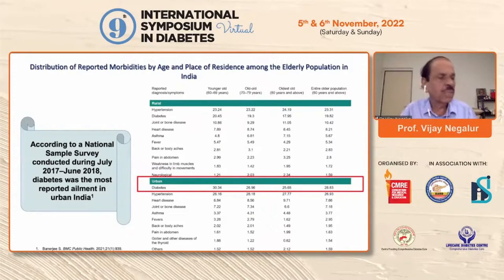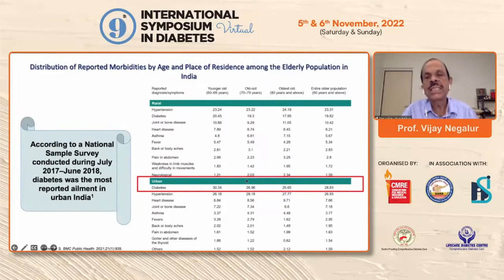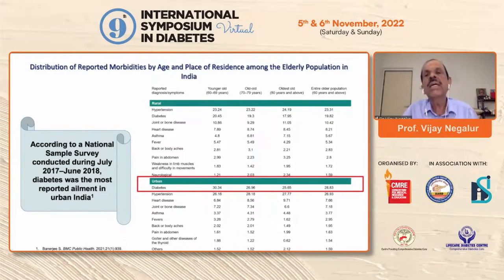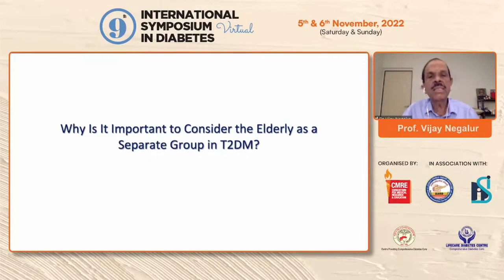If you see the distribution of reported morbidities and the incidence of diabetes depending on rural or urban residence, in the urban area between 2017 and 2018 — from a national sample survey looking at the young-old, old-old, and oldest-old — somewhere about 25 to 35%, with an average of about 28%, of the population in India above the age of 65 years is in the urban region, contributing a big chunk of elderly patients.